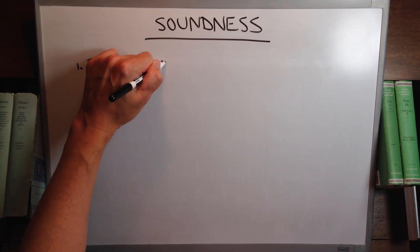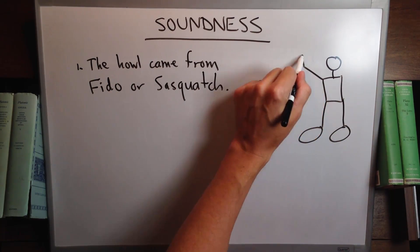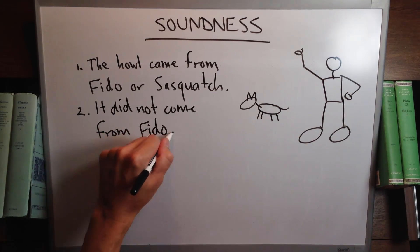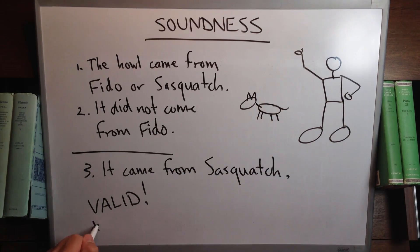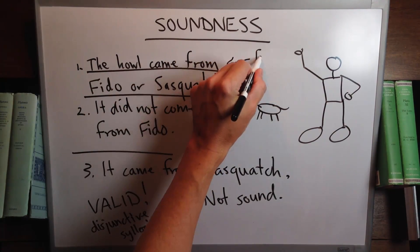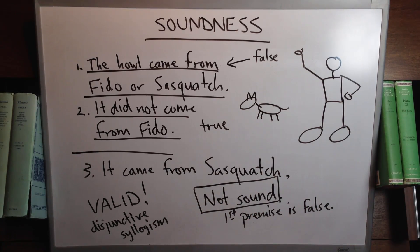Let's get an example. A coyote howls and your friend says, 'The howl came from Fido or Sasquatch.' In fact, the howl came from a coyote. Your friend then asserts that the howl did not come from Fido, so the howl must have come from Sasquatch. This is actually a valid argument — it's a disjunctive syllogism. However, it's not a sound argument because the first premise is false; the howl came from a coyote, and that's not one of the options in the first premise. A sound argument has to have true premises as well as being valid. Some valid arguments are not sound because they do not have true premises.